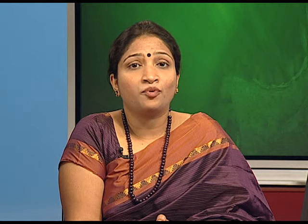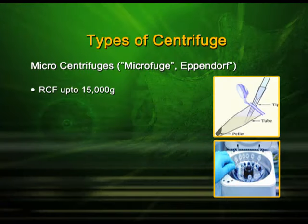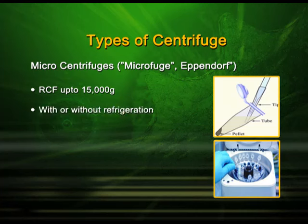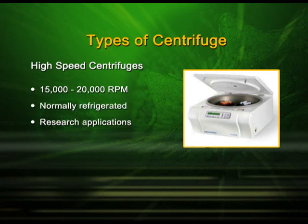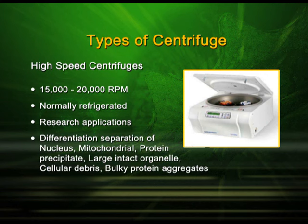The second type is the micro centrifuge. If you have samples in very minute quantities — in microliters — you use the micro centrifuge. It is most commonly used in biochemical and biotechnology labs and can have an RCF of up to 15,000 g. It can be with or without refrigeration. The third type is the high speed centrifuge, which has an RPM of around 15,000 to 20,000, is normally refrigerated, and is used for research applications — including separation of mitochondria, protein precipitates, microsomes, and other bulky protein aggregates.